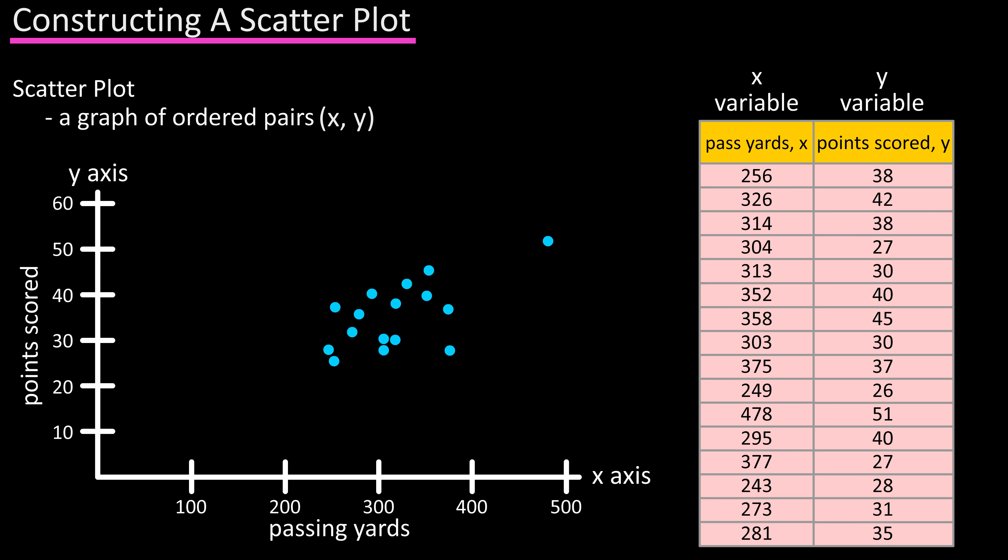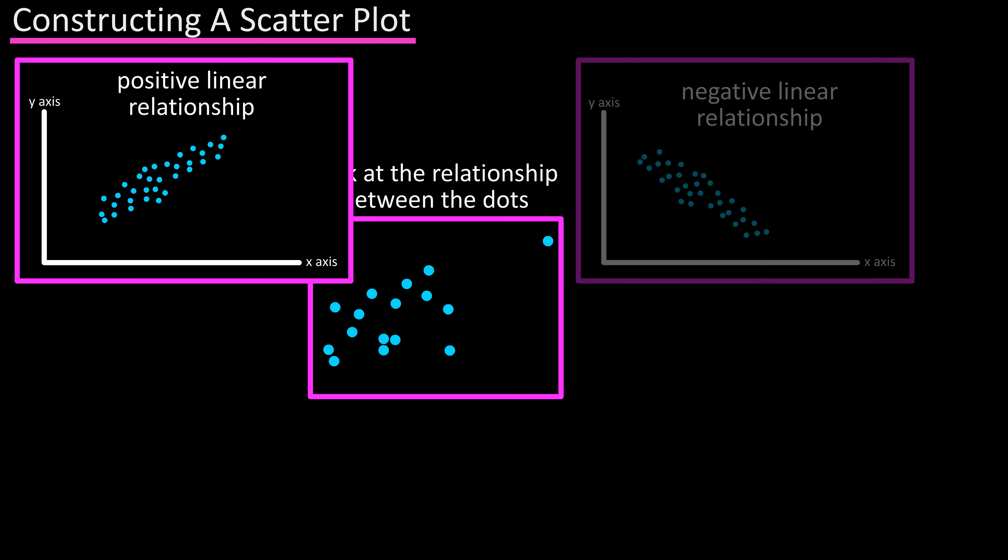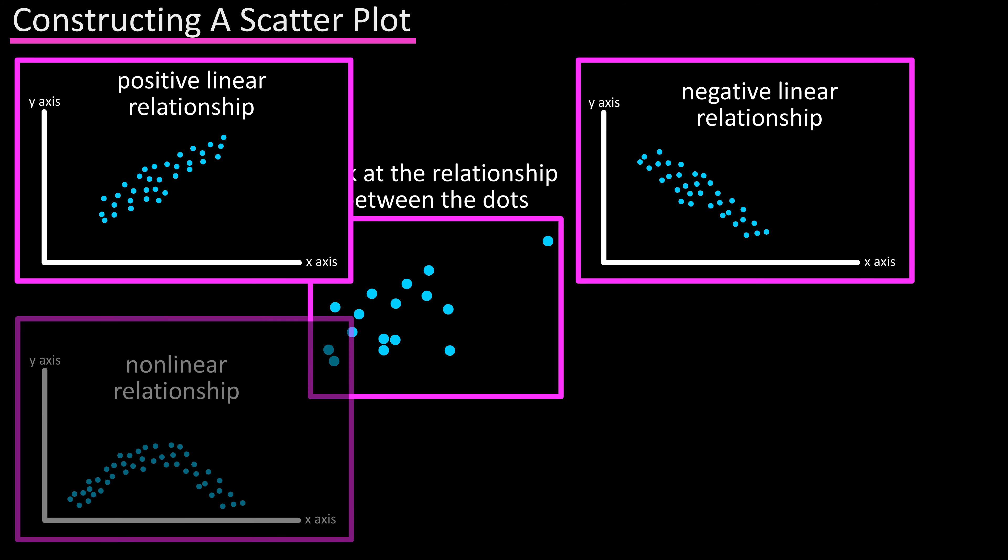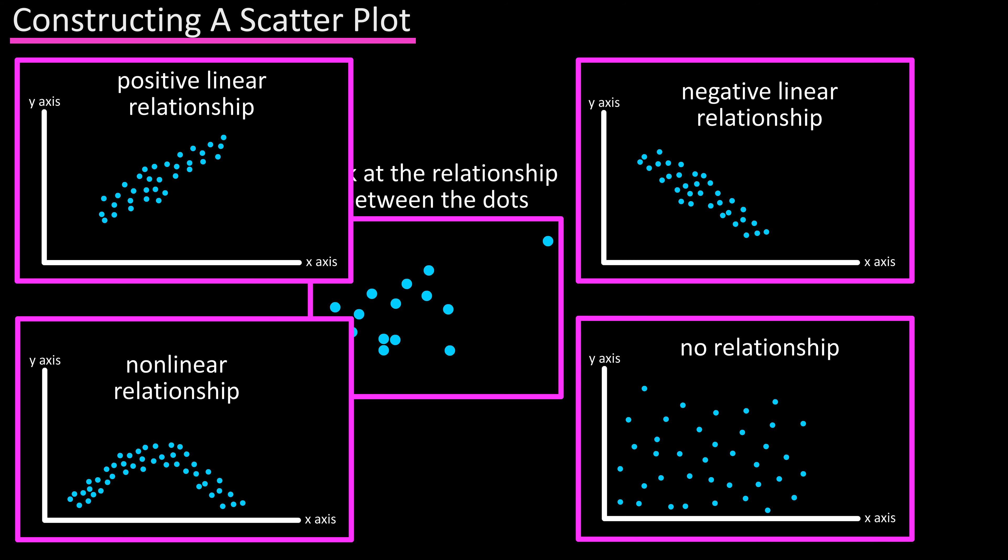When looking at a scatter plot, one thing to take note of is the overall relationship between the dots. You can have a positive linear relationship, a negative linear relationship, a curved relationship, or even no apparent relationship.